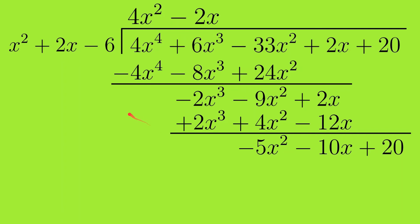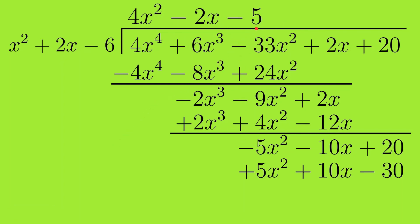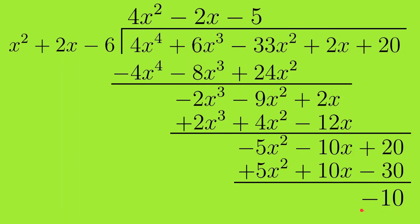Next, x² times what gives minus 5x²? That is minus 5. We write minus 5 in the quotient and multiply minus 5 by (x² plus 2x minus 6), giving minus 5x² minus 10x plus 30. Switching signs gives plus 5x² plus 10x minus 30. The x² and x terms cancel, and 20 minus 30 gives minus 10. Since the degree of minus 10 is less than the degree of the first term of the divisor, minus 10 is the remainder, and the quotient is 4x² minus 2x minus 5.